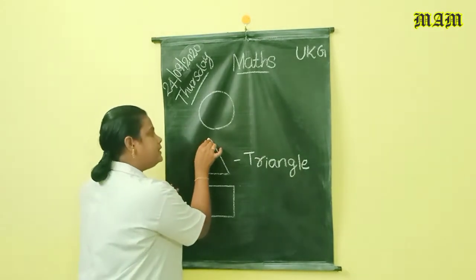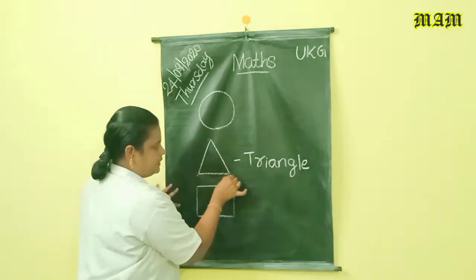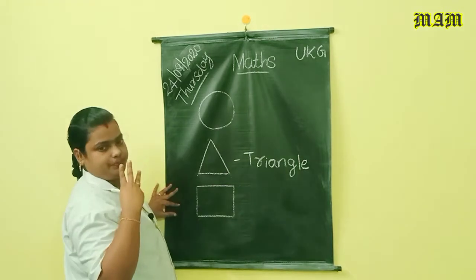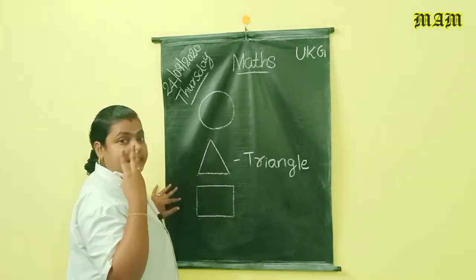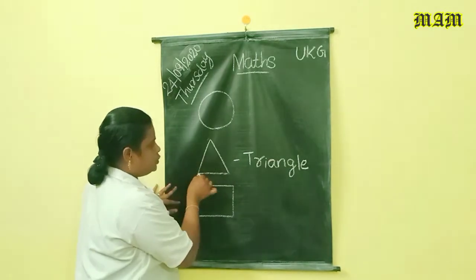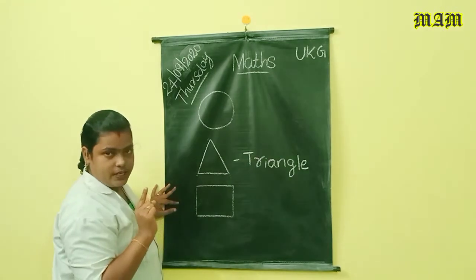Triangles have three corners. One, two and three. Triangles have three corners. Triangle, how many corners? Three corners. One, two, three. Okay, all of you got it? Triangle.